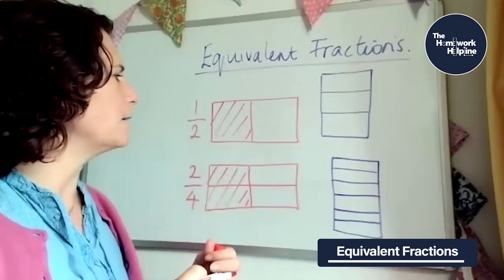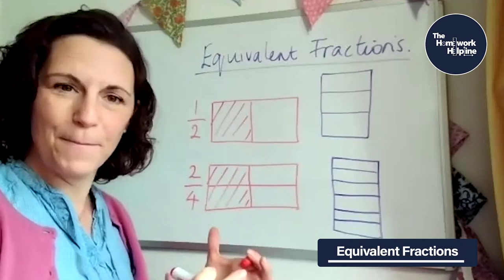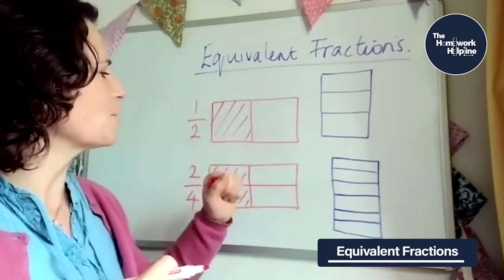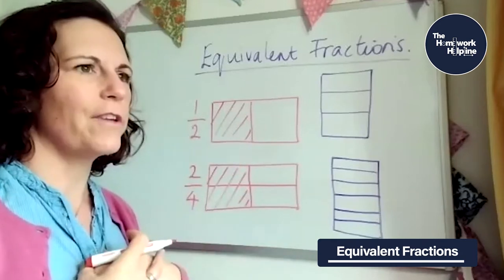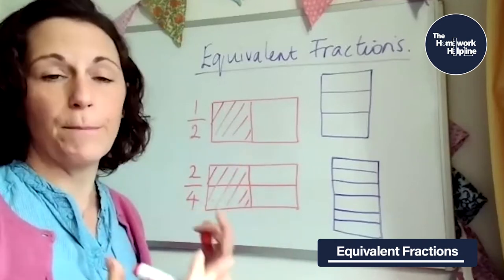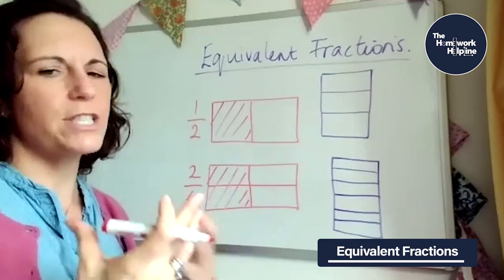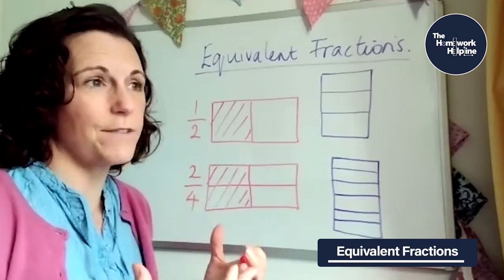So if this was a chocolate bar, I love a chocolate bar. If this was a chocolate bar, and I said to you, would you like half? Or would you like two quarters? You'd say they are the same amount. So it's just getting the same amount, but using different numbers.